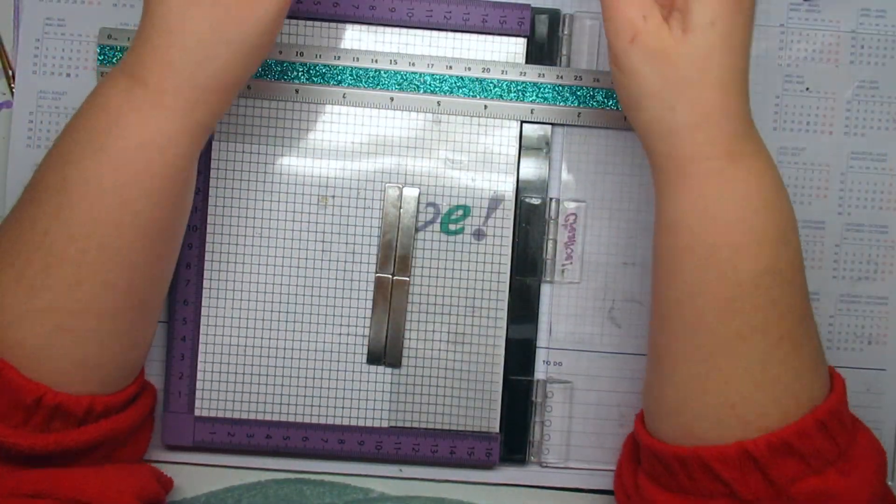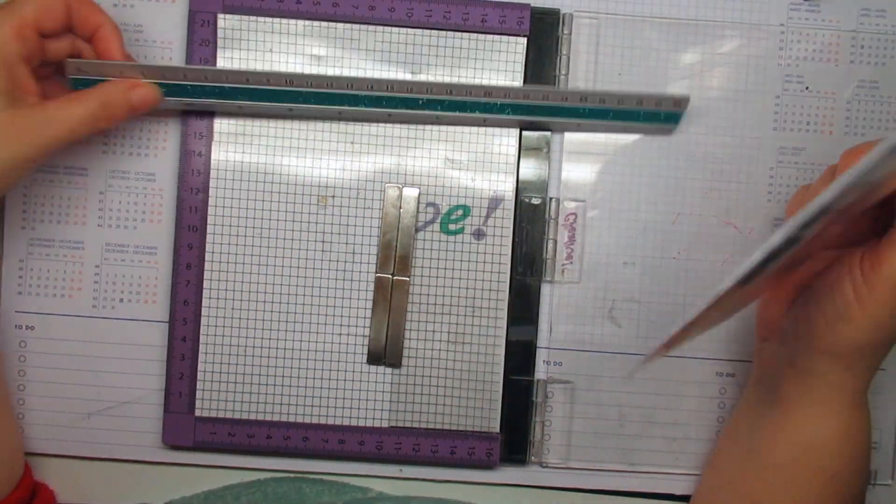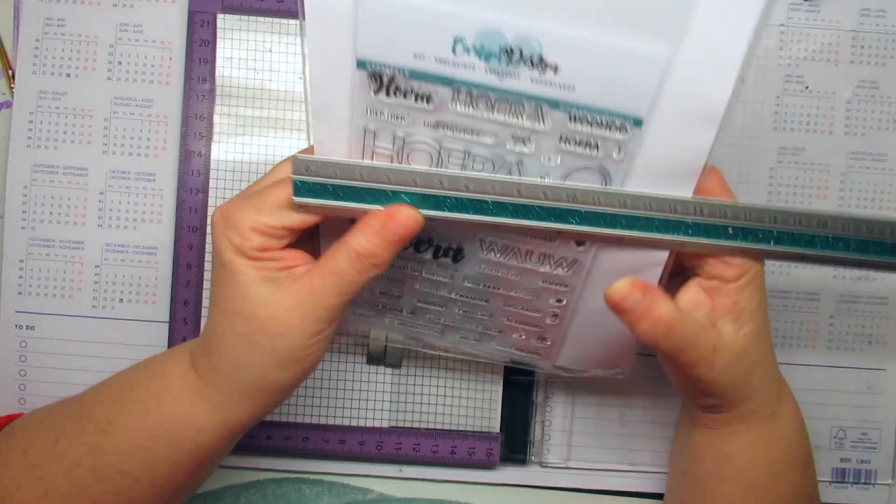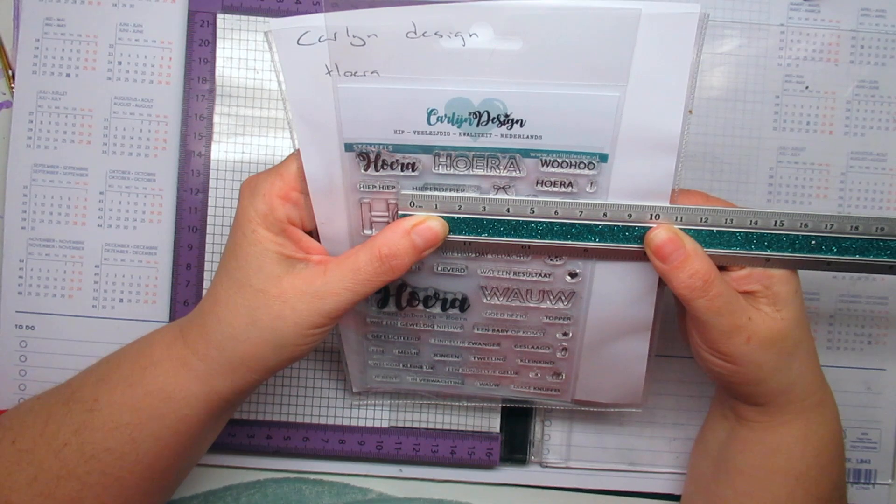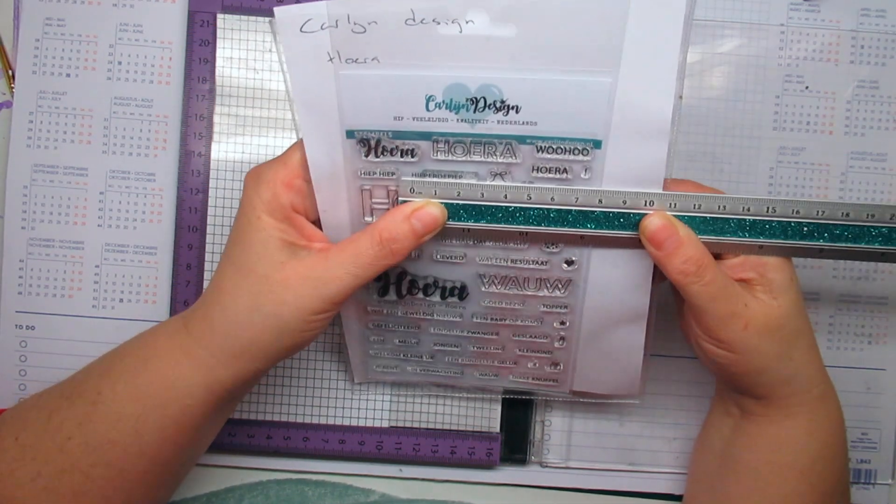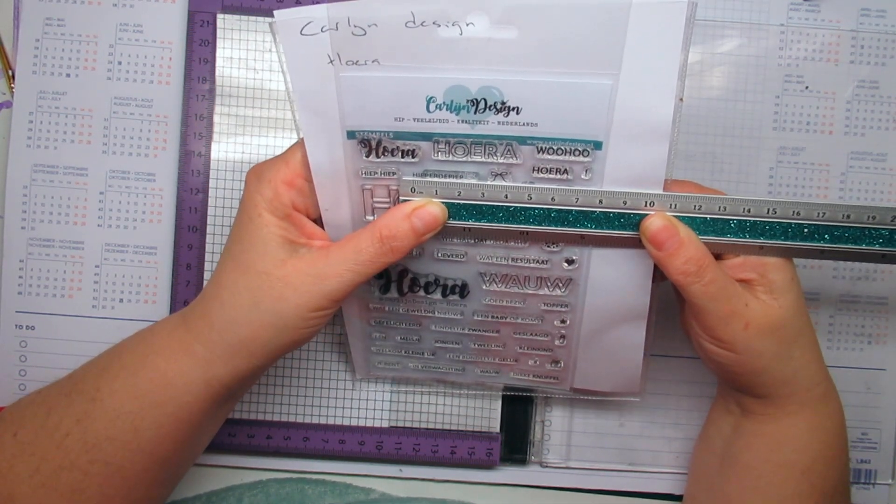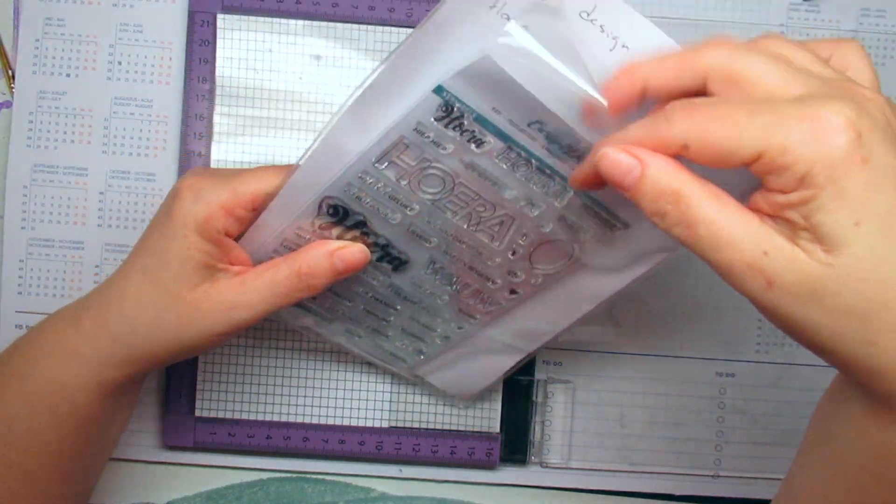So I'm using the grid to put the Hoorah and the hip hip, I don't know there's a hip hip in there as well heepeep but this is heepe de peep so I'm not sure what that is in English but it doesn't really matter, it's for birthdays.